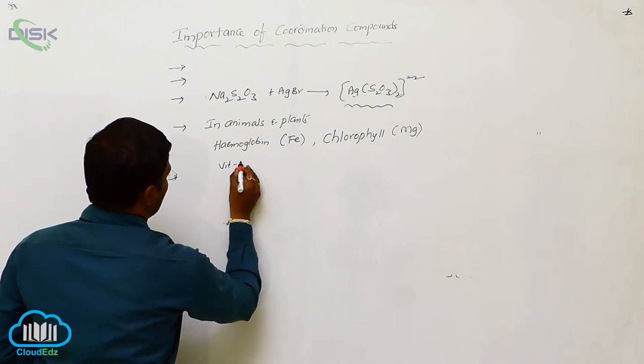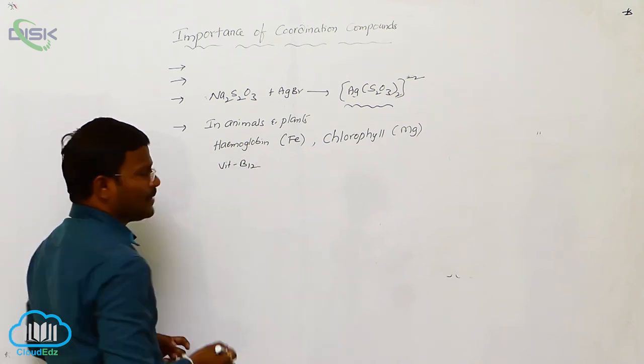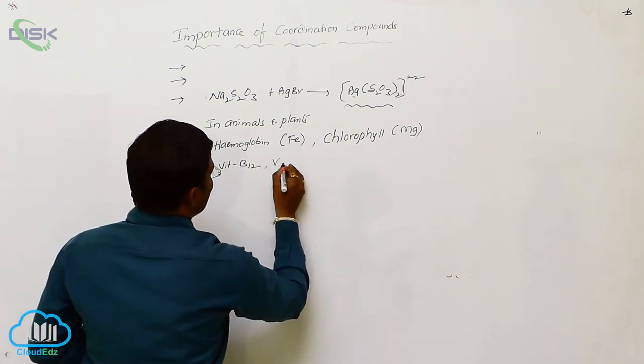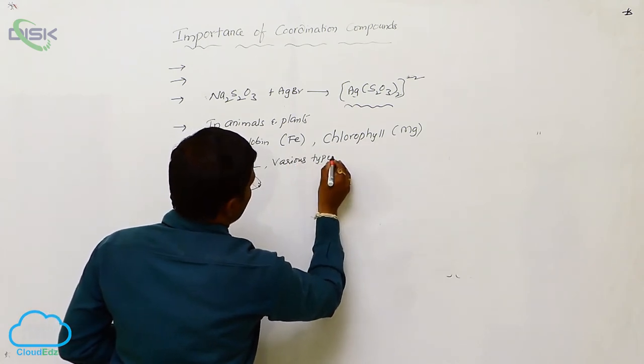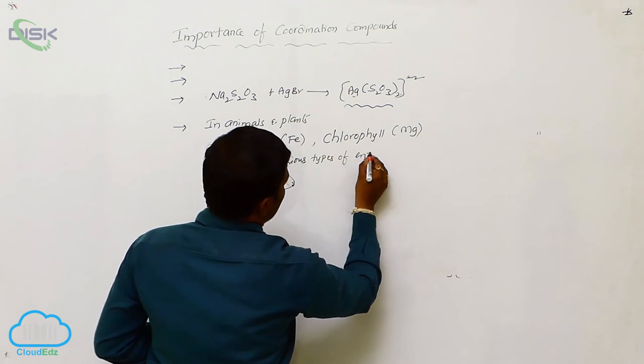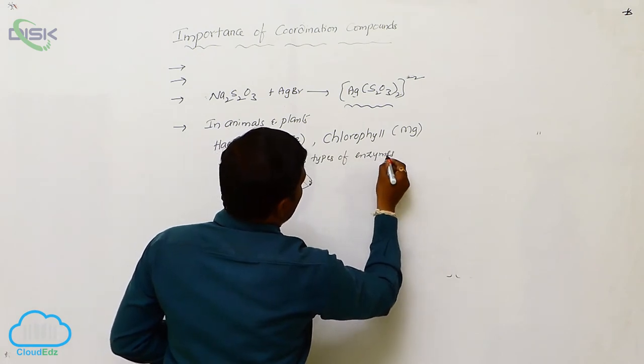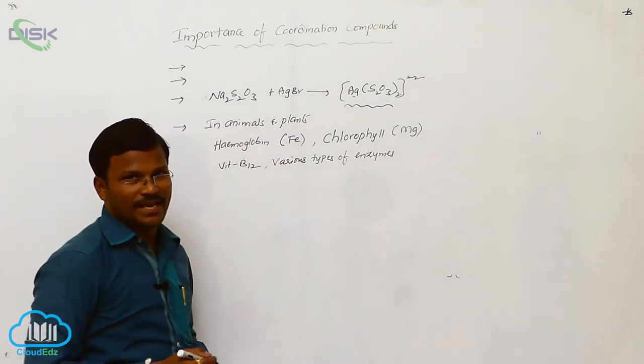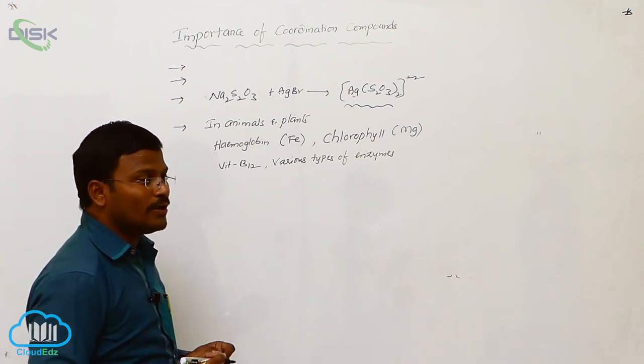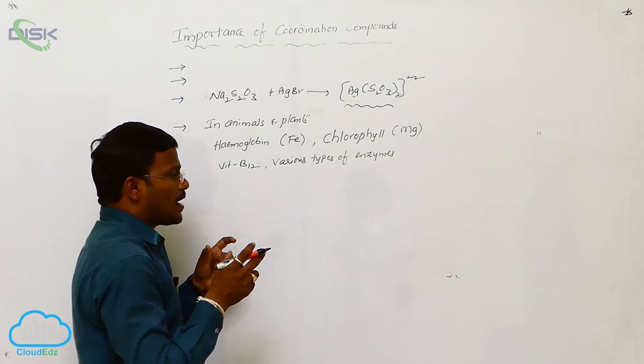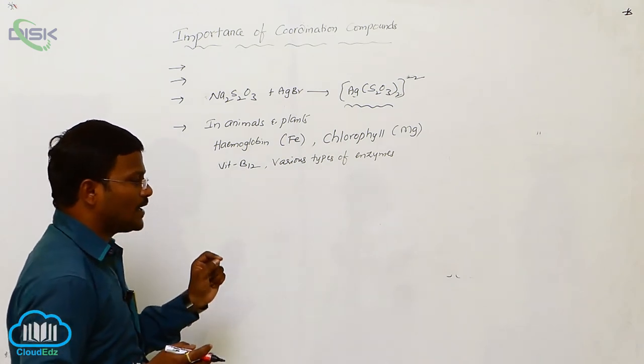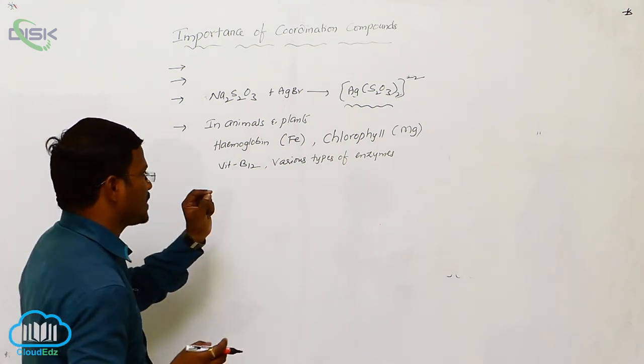vitamin B12, cyanocobalamin, and also various types of enzymes in our body, various types of enzymes like carboxypeptidase and carbonic anhydrase. These types of enzymes are having coordination covalent or coordination complex skeletons.